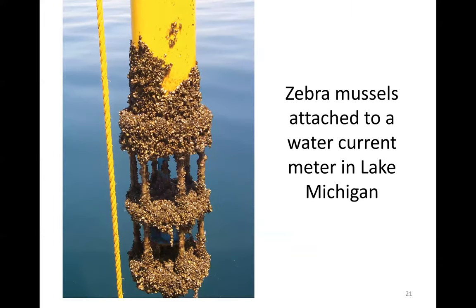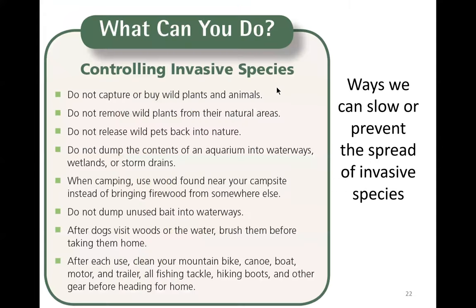Zebra mussels also jam rudders of ships and grow in huge masses on boat hulls, piers, and other solid surfaces — as seen here attached to a water current meter in Lake Michigan. They don't have natural predators in the Great Lakes, so their population goes unchecked.